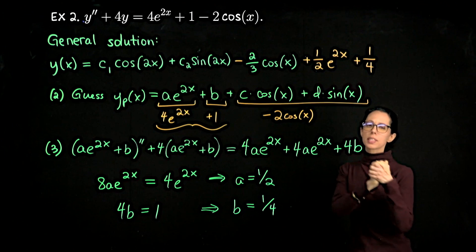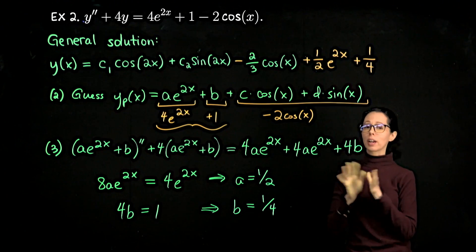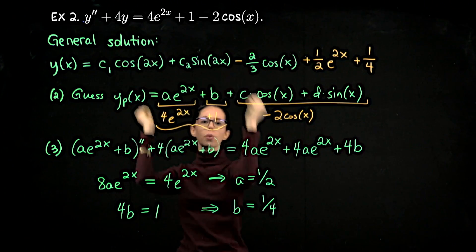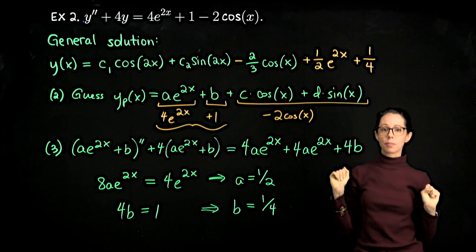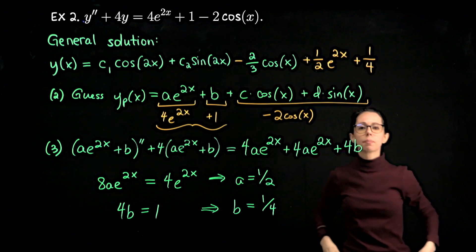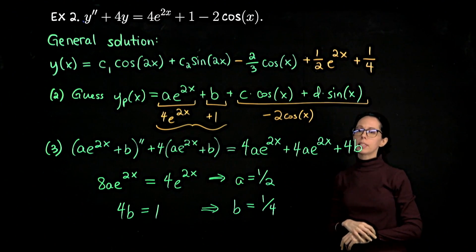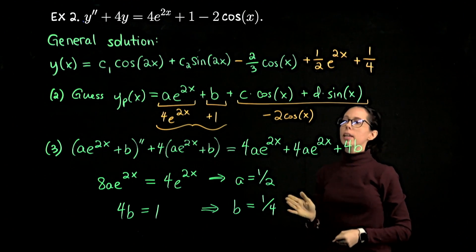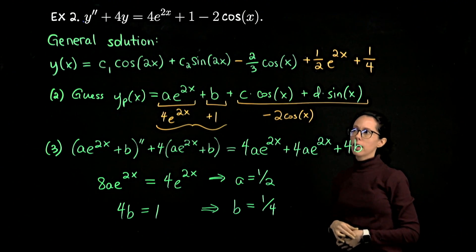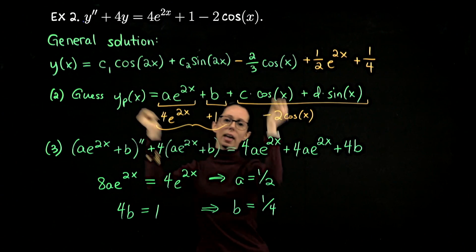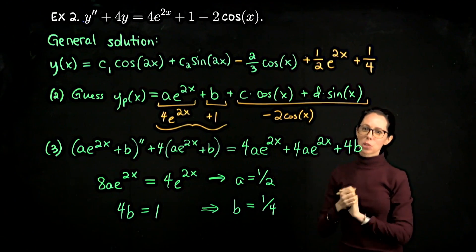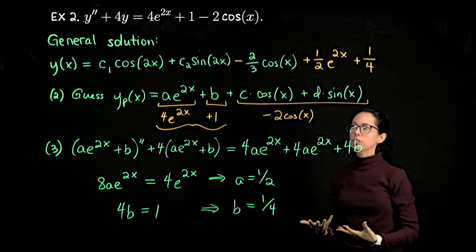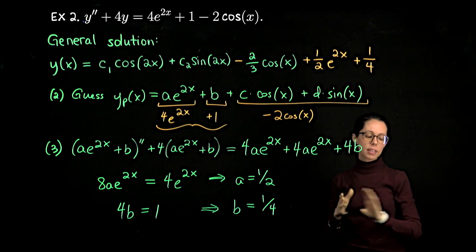There's a comment I intended to make as we worked through example one. When we looked at the homogeneous solution — a combination of sines and cosines of 2x — and our particular solution also has sines and cosines, you want to make sure you're not duplicating the fundamental pieces from the homogeneous solution. If we had cosine of 2x and sine of 2x in the particular solution, that would duplicate the homogeneous solution. That didn't happen here. There's something specific you do when your particular solution resembles the homogeneous solution too closely — I'll save that for another video.